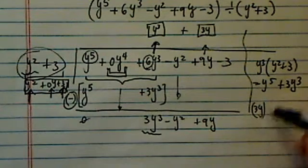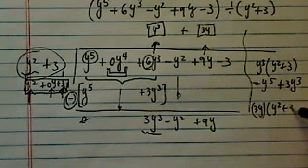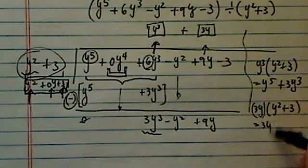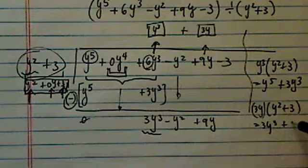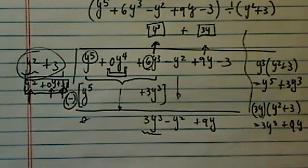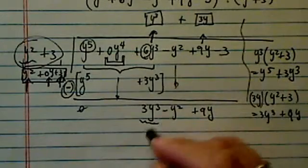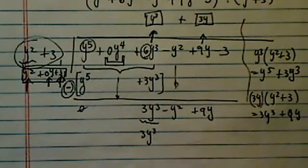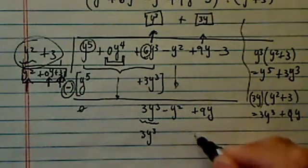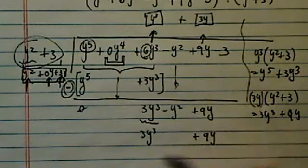So of course I need a 3y over here. So let's do it on the side. It's 3y times y squared plus 3. That equals 3y cubed plus 9y. I have a 3y cubed. I don't have anything y squared. And then I have a plus 9y.